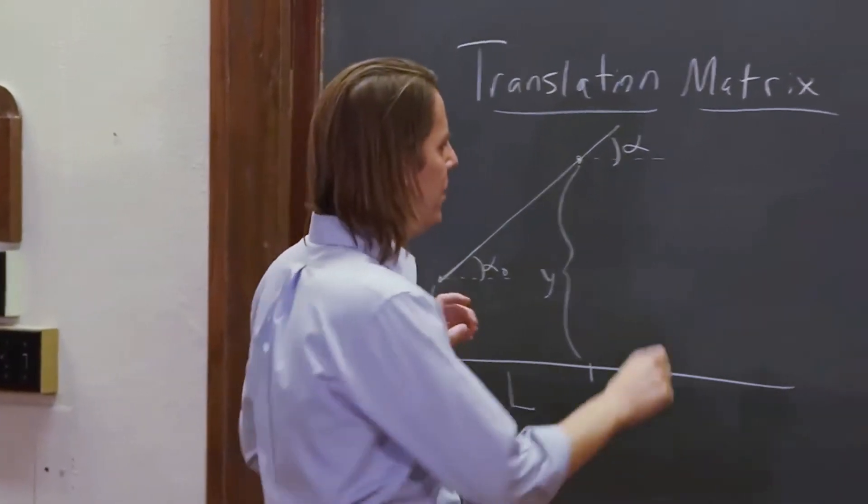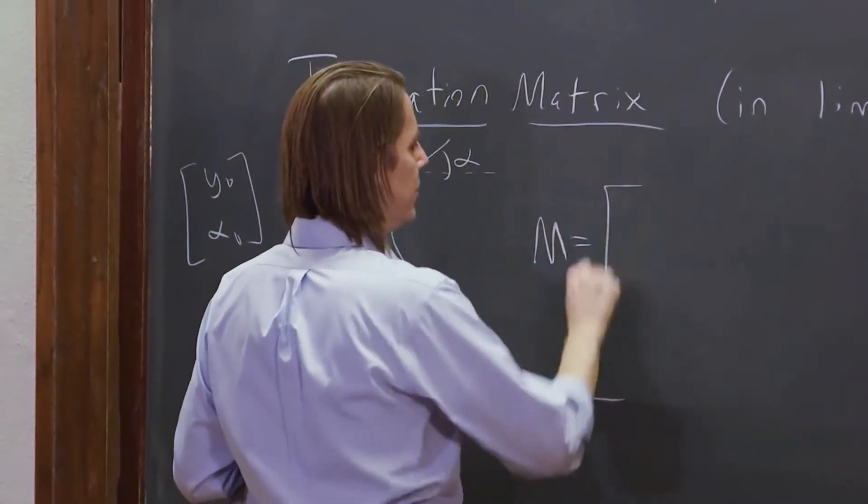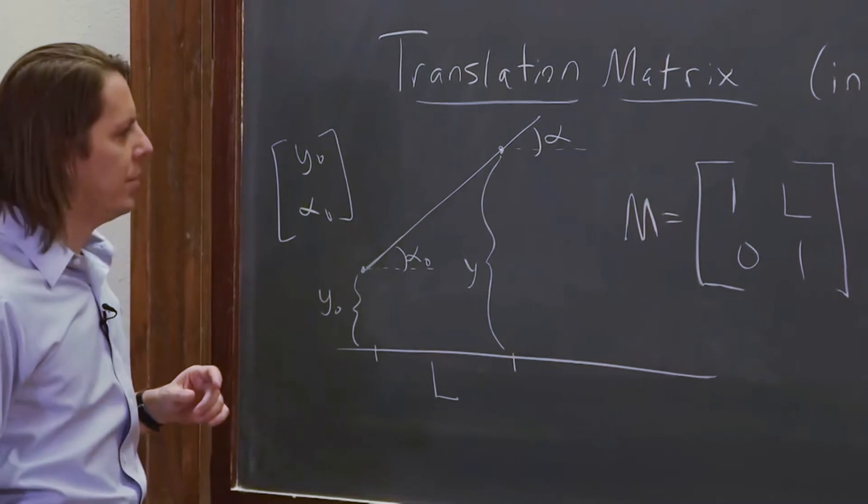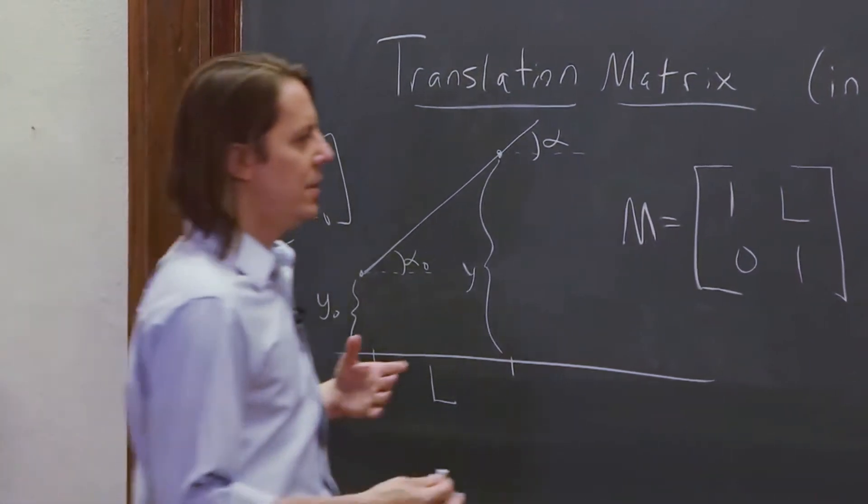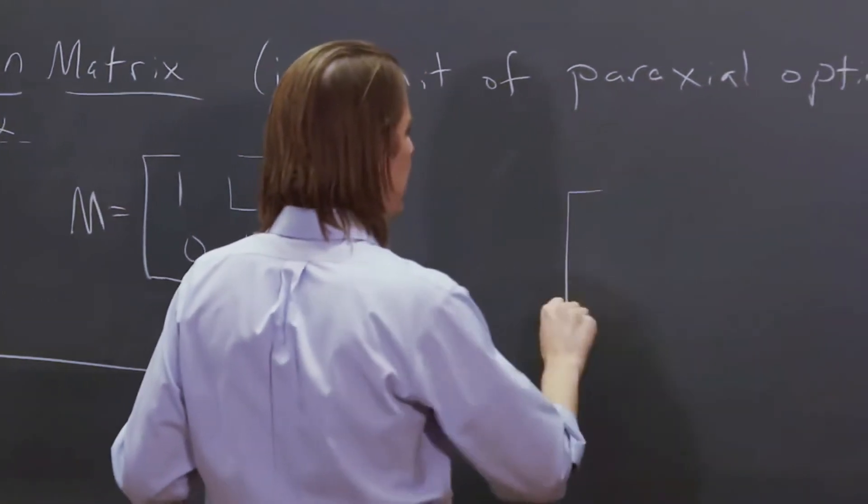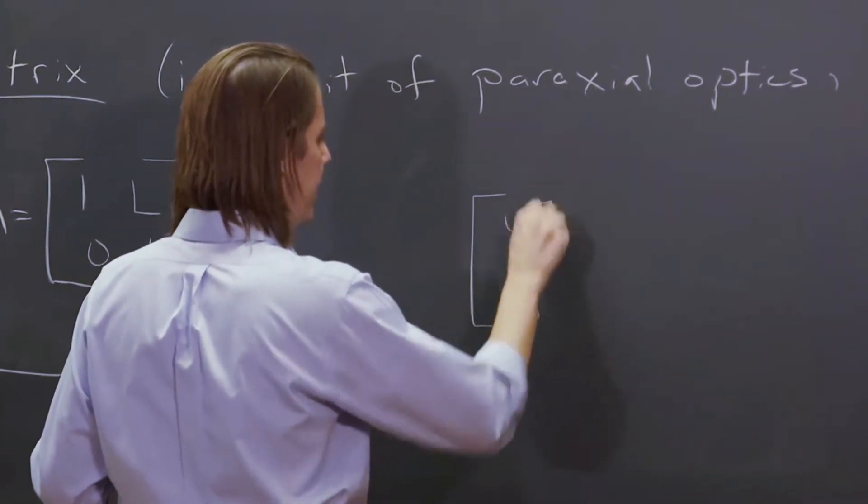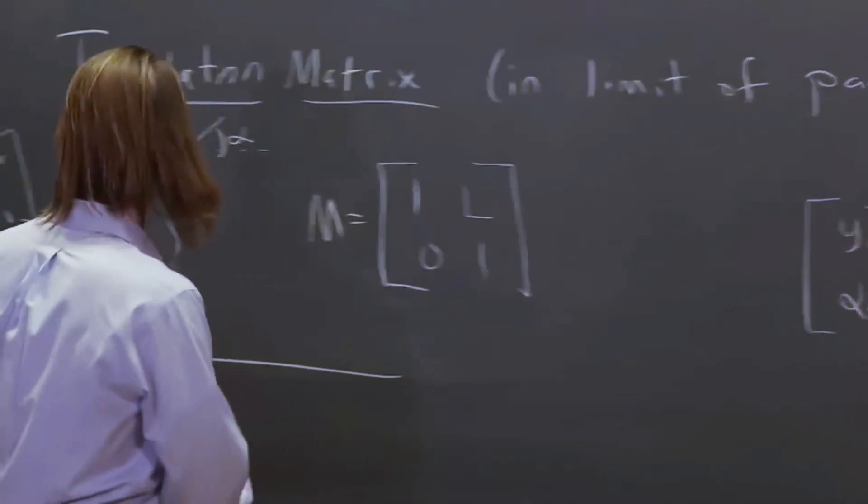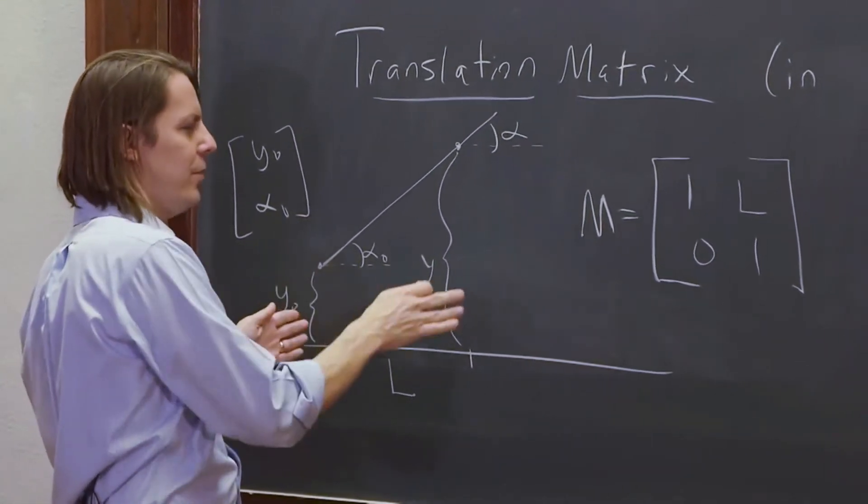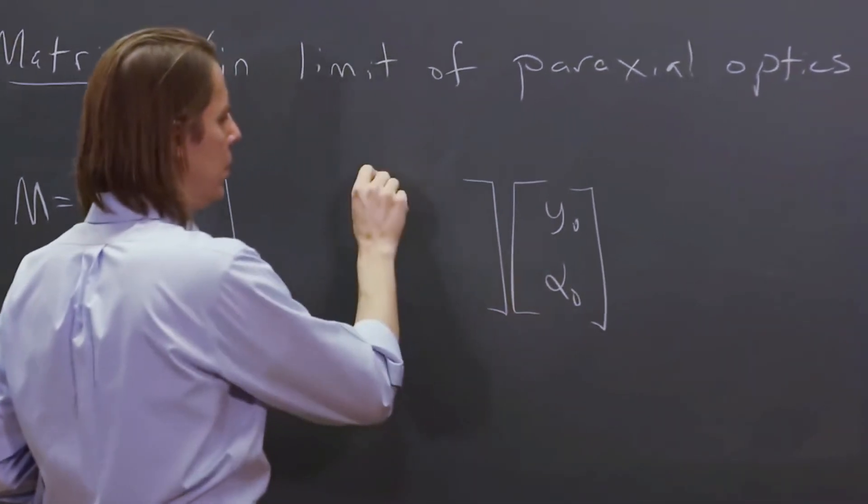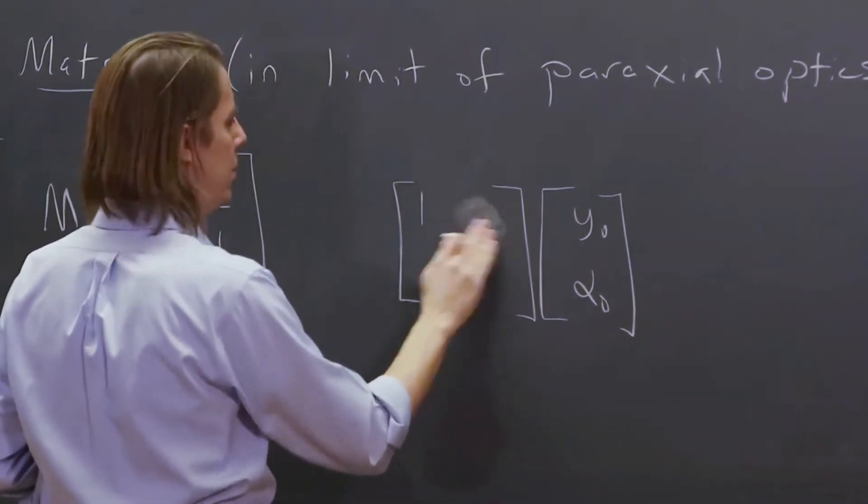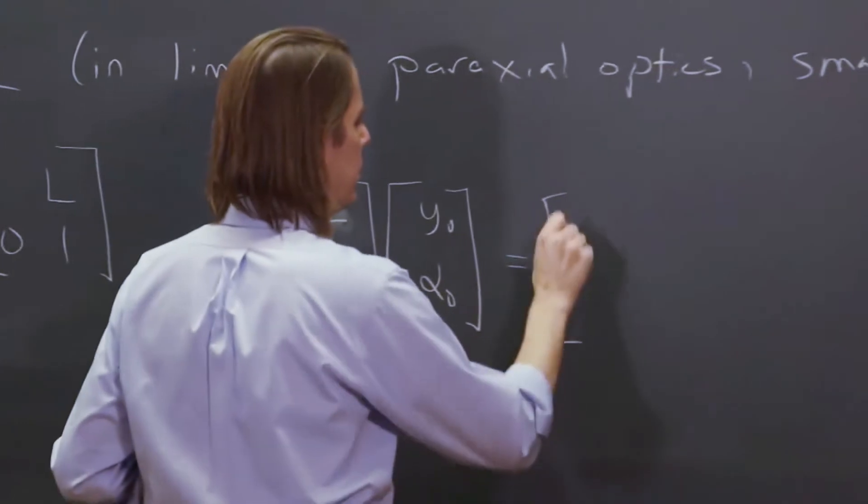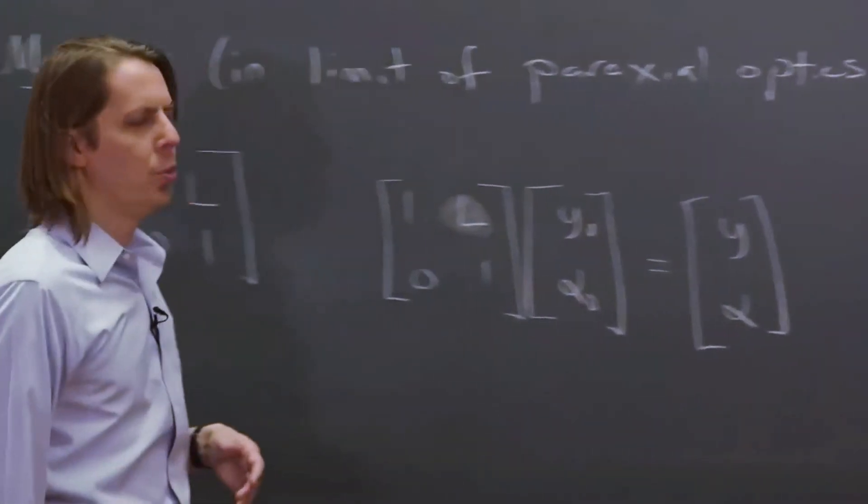So we have a matrix that describes that. The matrix is 1, L, 0, 1. And the way we use it mathematically is we say, what happens? Well, we take your input light, y naught, alpha naught, and then you apply the matrices to it as things happen. So what happened? We had this ray and it translated. So that's 1, L, 0, 1. And then that is going to be equal to y and alpha.